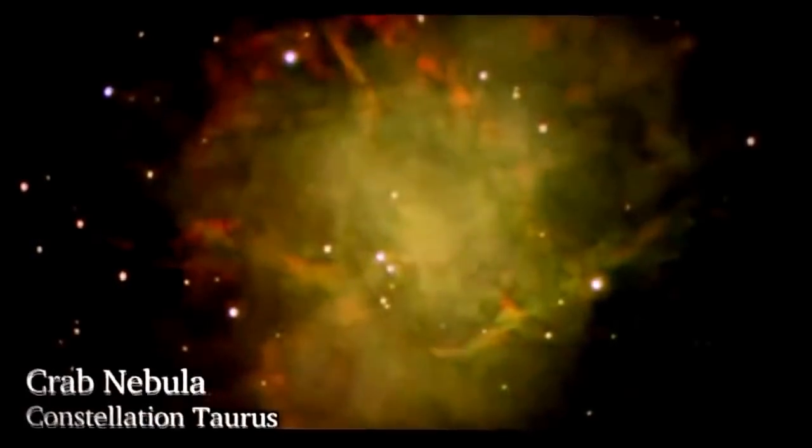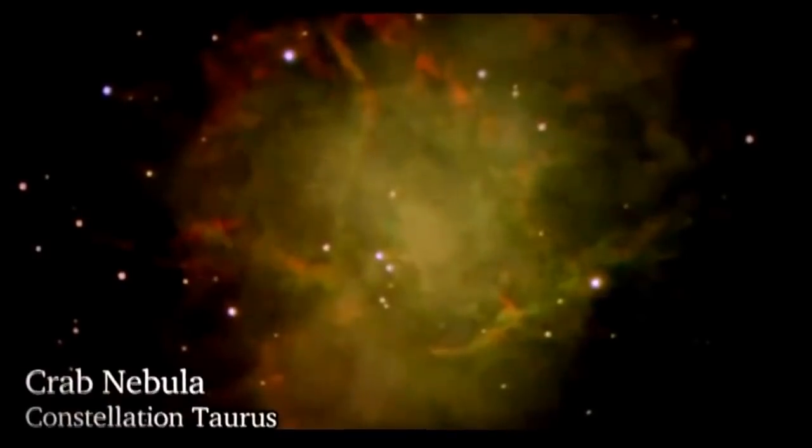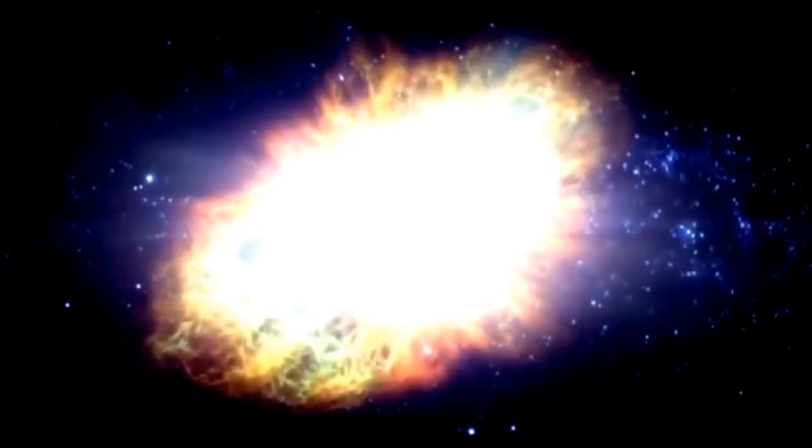Telescopes were pointed to the Crab Nebula in the constellation Taurus. The Crab Nebula is formed of the remnants of a supernova that occurred in 1054. Ancient texts record that supernova. It was so brilliant that it could be seen even in the middle of the day.